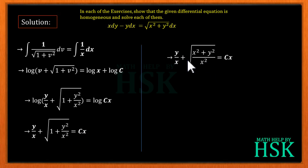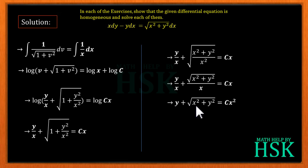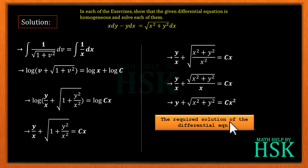Taking LCM, we write y/x + √(x² + y²)/x² — taking the square root of numerator and denominator separately gives (y + √(x² + y²)) / x = cx. Multiplying both sides by x, we get y + √(x² + y²) = cx², which is the required solution of the differential equation.